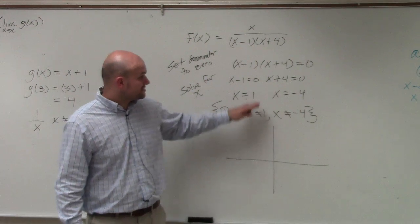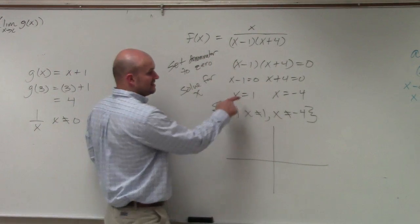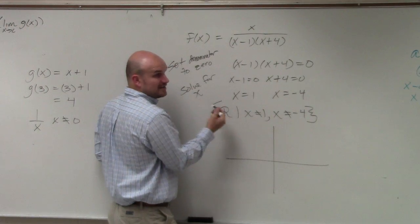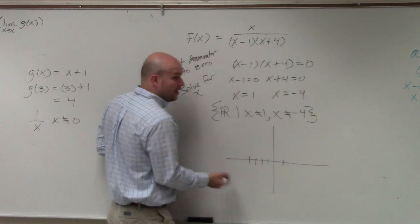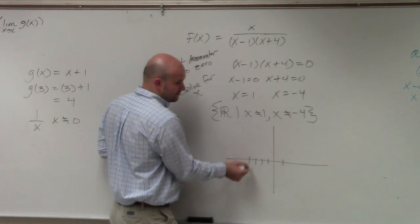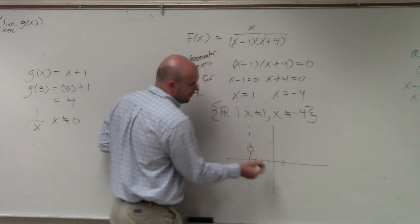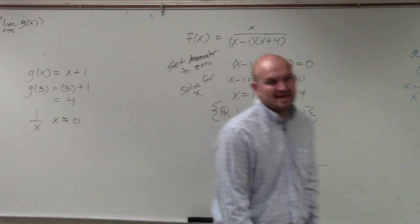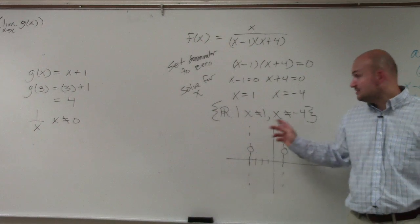Now, do we know what this graph looks like at all? I have no idea what it looks like. All I know is x can't equal 1 and x can't equal negative 4, because those numbers aren't in the domain. So I go to 1 and 1, 2, 3, 4. Now, hopefully in algebra 2, you guys remember that when it's not a part of the domain, it's either an asymptote or a hole. We're going to learn about that later. You don't really need to know if it's an asymptote or a hole right now.